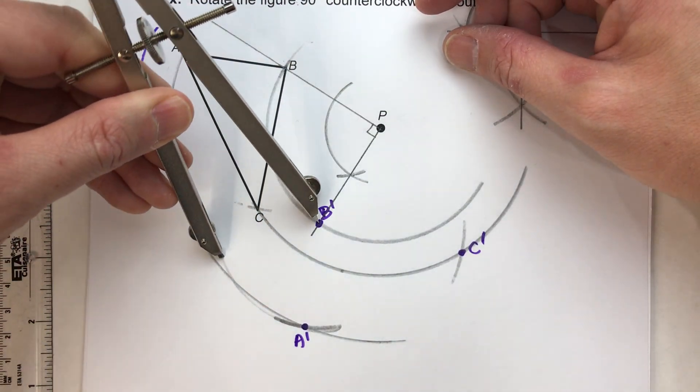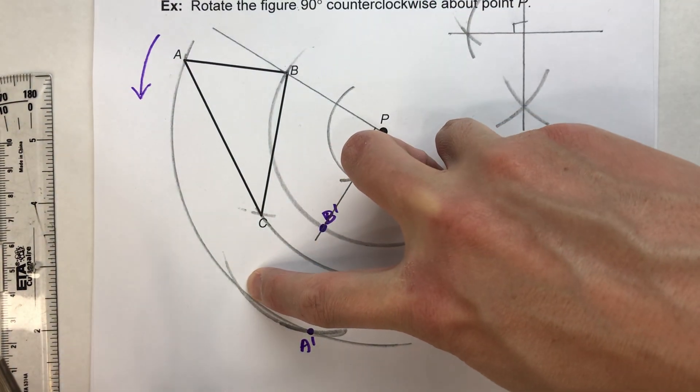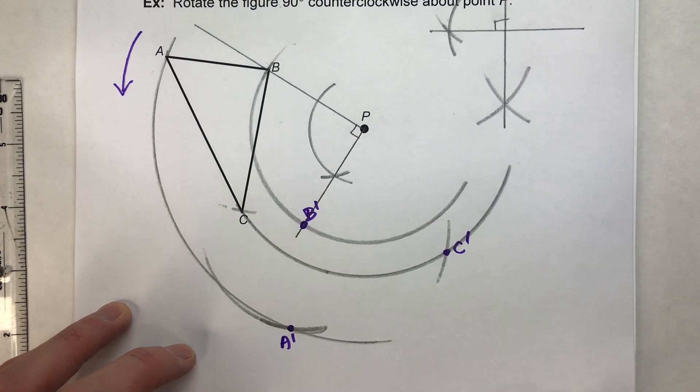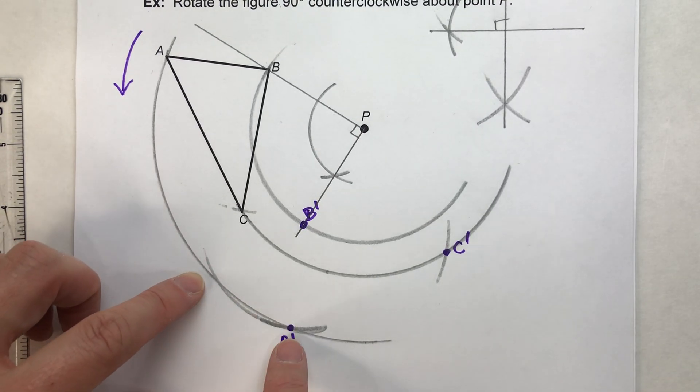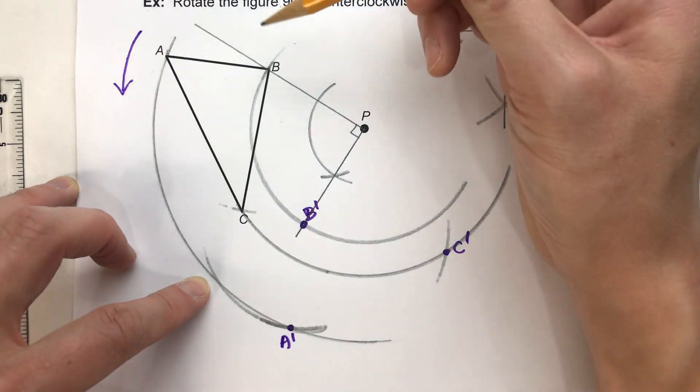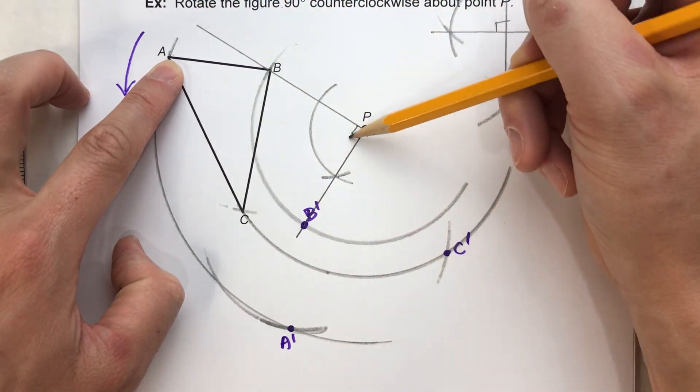But if I continue this arc, it'll actually hit back here too. It also hits there too. So it can be a little confusing for people when you're constructing it because there's two different places A could potentially go. But only one place makes sense. Remember what we said. A is out a little bit in front of this line, P to B.